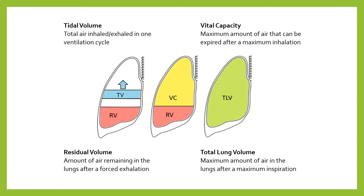That leftover air is shown at the bottom of the diagram in pink, labeled RV — residual volume. It's called residual because it's left over. Residual volume is the amount of air that remains in the lungs after you've forced out as much as you possibly can. So: fill the lungs to maximal capacity (total lung volume), force out as much as you can (vital capacity), and whatever air remains is the residual volume.